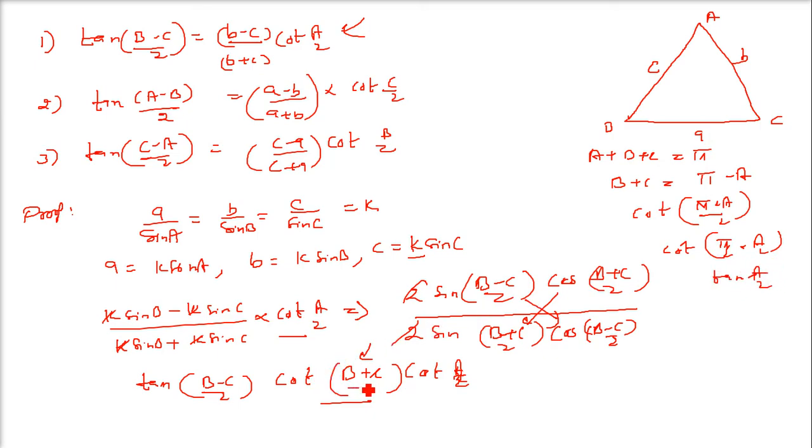So I can put in this place tan a by 2. When I put tan a by 2, this is cot a by 2. So tan and cot a by 2 are what? They are reciprocal. So they get cancelled.